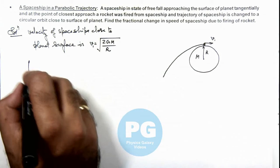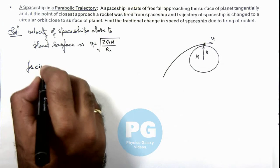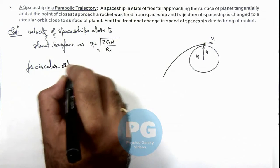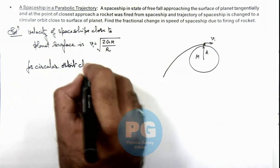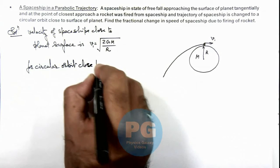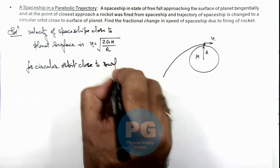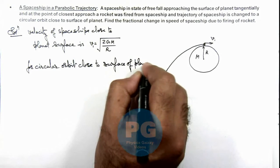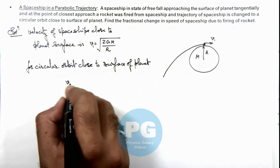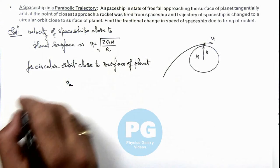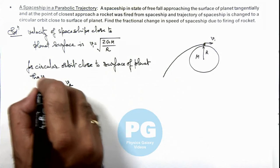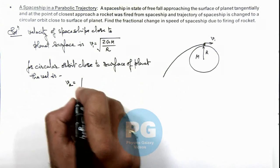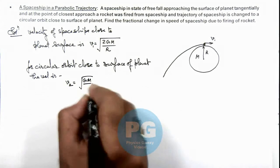And we can write for the circular orbit close to the surface of the planet, the velocity should be v2. This velocity is given as v2, which is the root of GM/R.